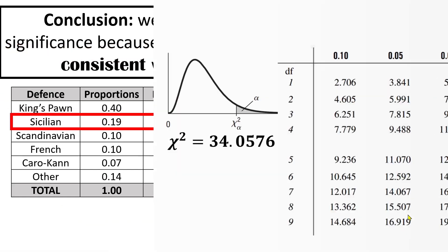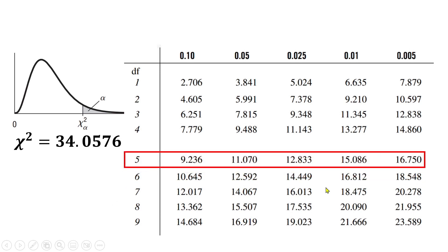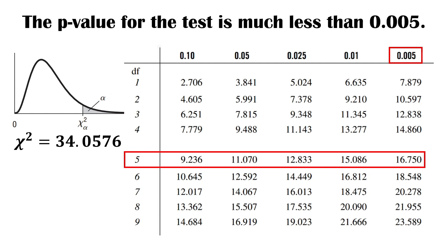Let's look at the p-value. We're still talking about five degrees of freedom. If our test statistic was 16.750, the area in the upper tail is 0.005 — that's one half of 1%. This statistic is the test statistic we actually got, and it's more than twice that value. So we can expect the p-value to be essentially zero. That tells us we have very strong evidence against the null hypothesis in this case.